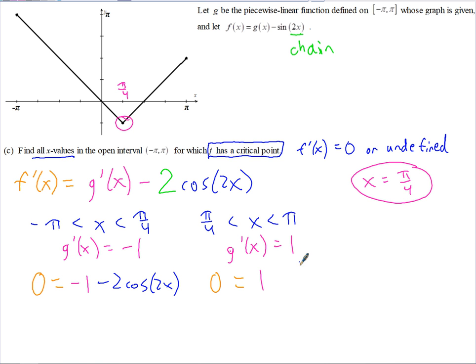So if we put those values in here, and we set it equal to 0 to find our critical numbers, the first one, what it's undefined at we already found. So it would be 0 equals, one possibility for this interval is -1 minus 2cos(2x). And for the other interval, 0 = 1 - 2cos(2x). So if we isolate the cosine on both of these.